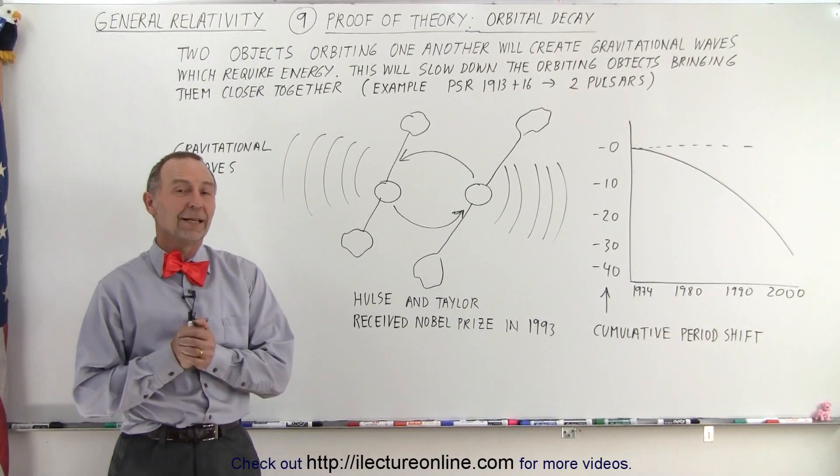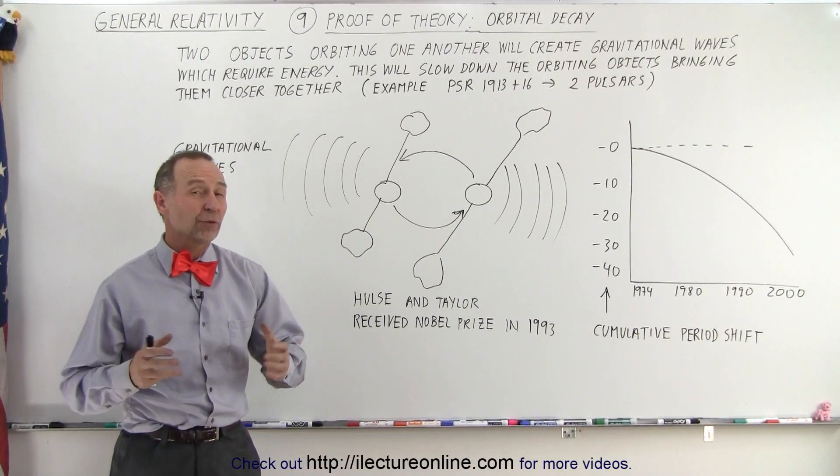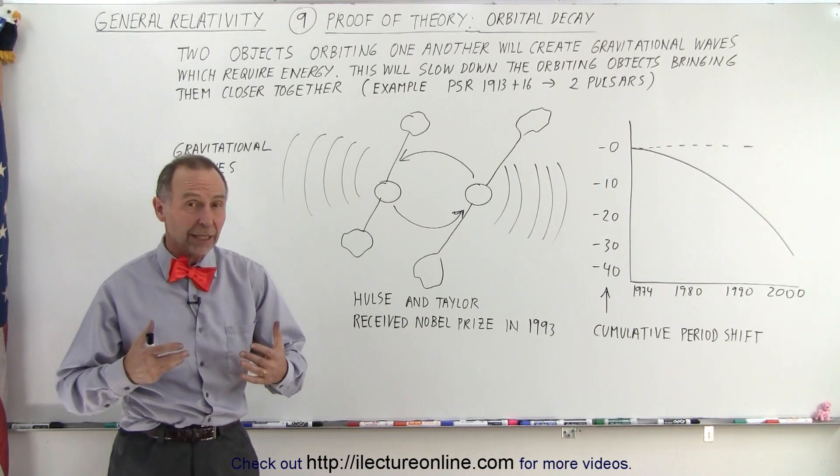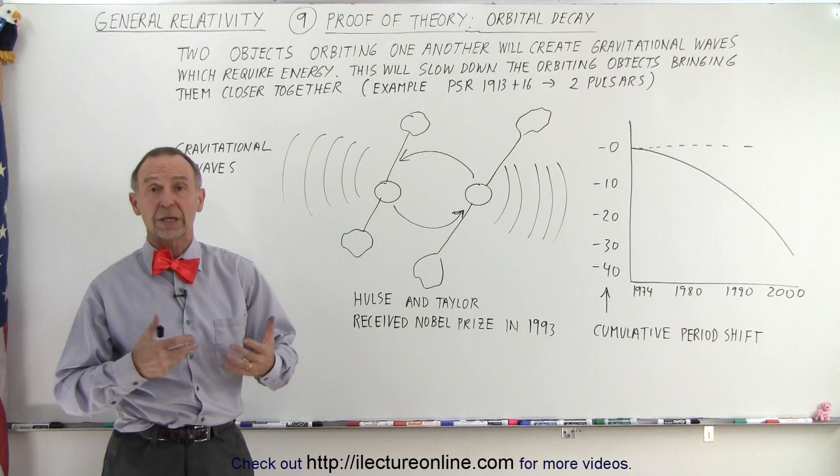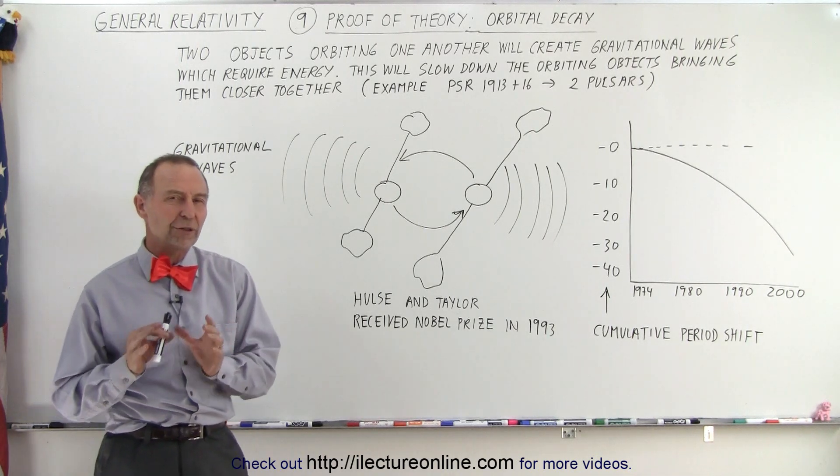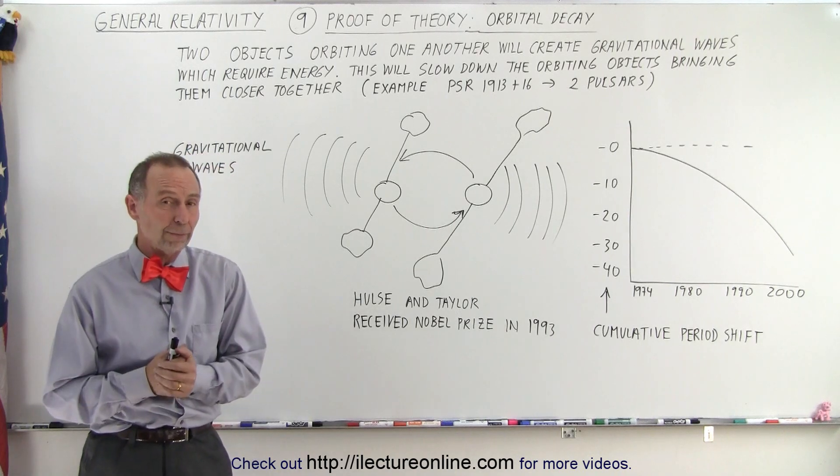Welcome to Electron Line. Another way in which it was proved that the theory of general relativity was real and could be shown to be correct in various ways was the emission of gravity waves, or gravitational waves as they call them.